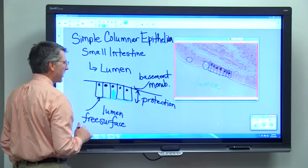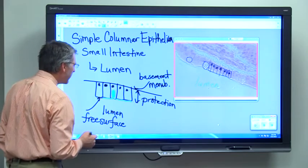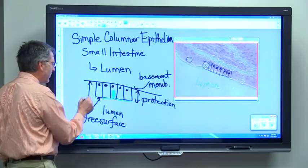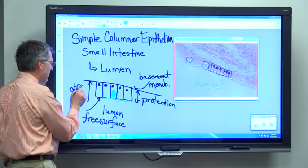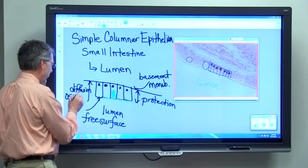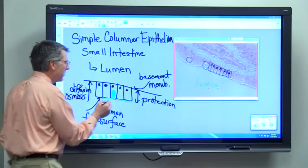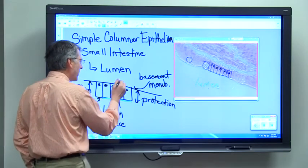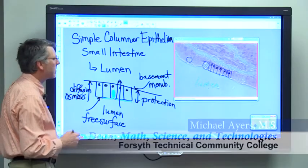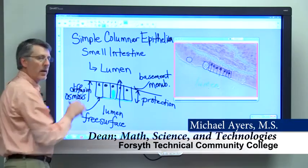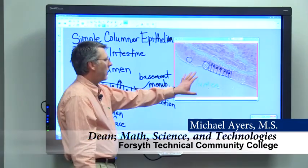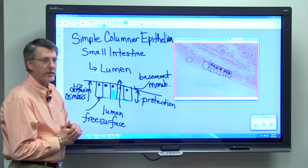And it's also involved with diffusion and osmosis as nutrients and water will move across this membrane and into, ultimately, the bloodstream. So, simple columnar epithelium, and we've looked at a micrograph of the small intestine to demonstrate this tissue.